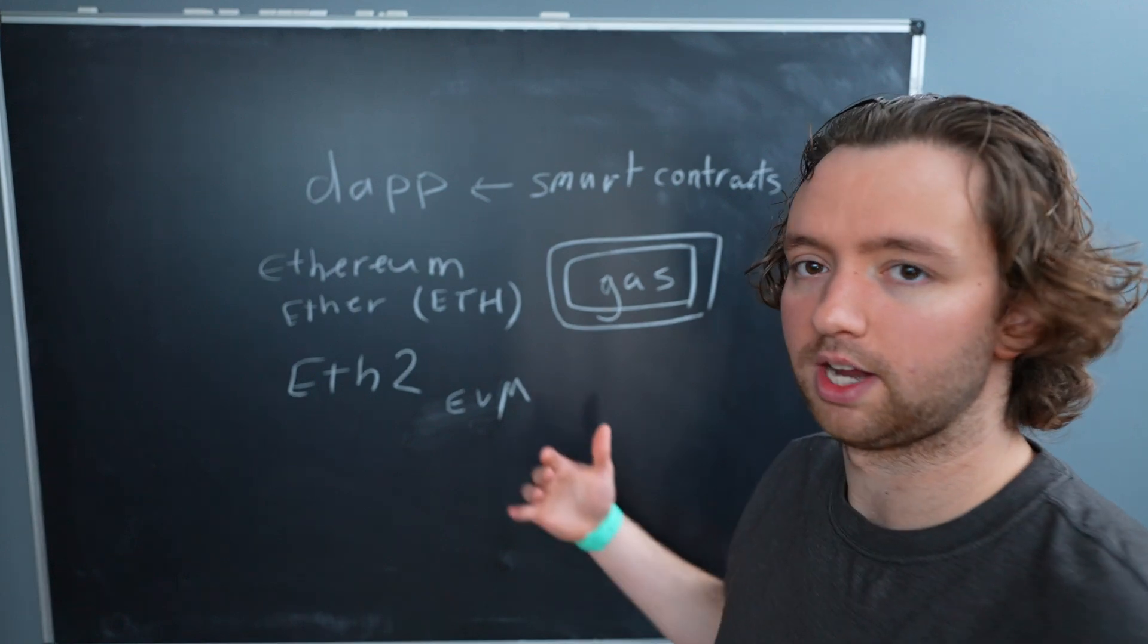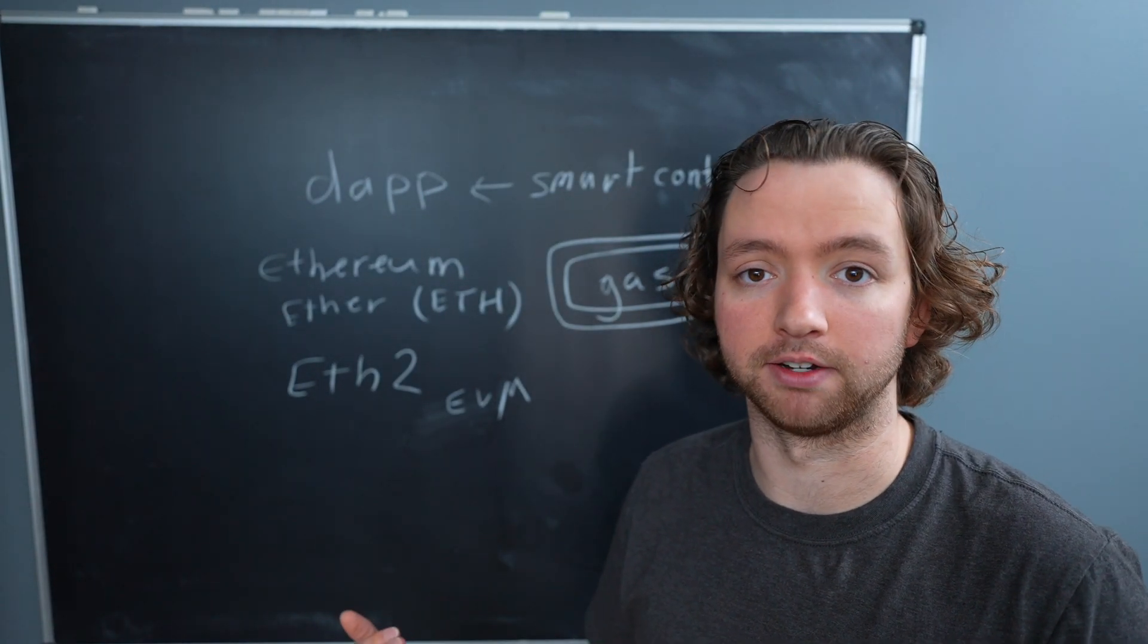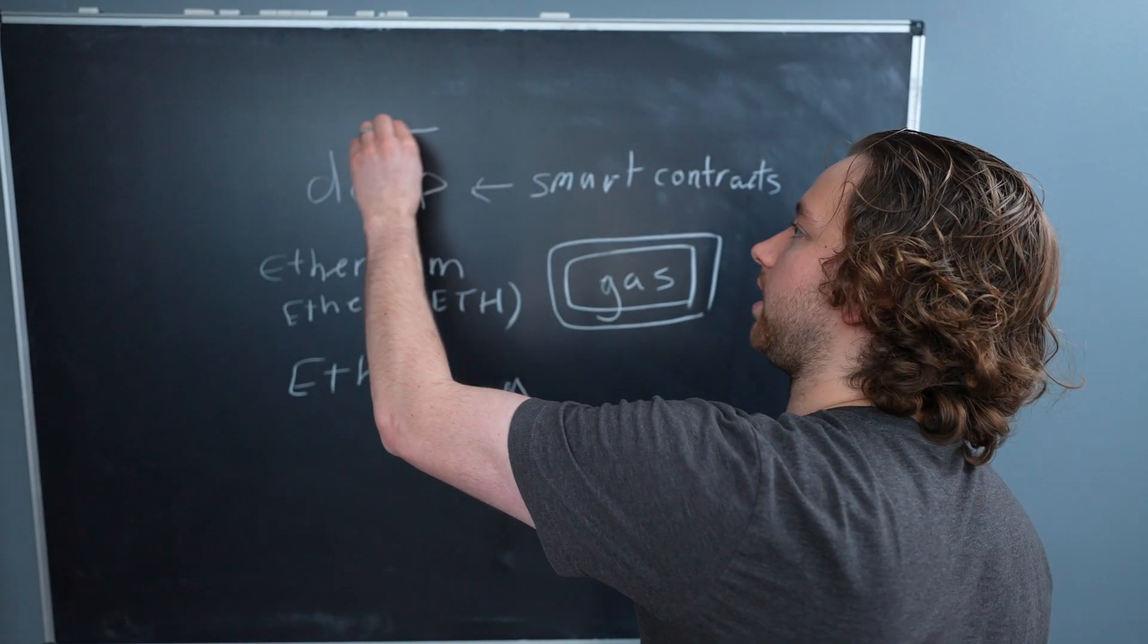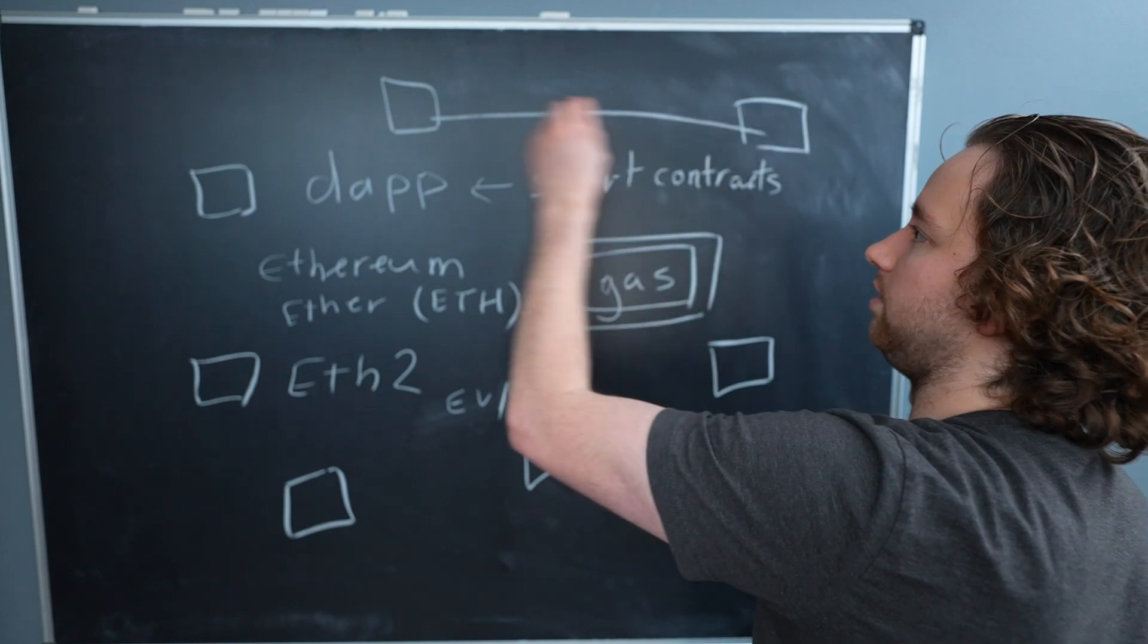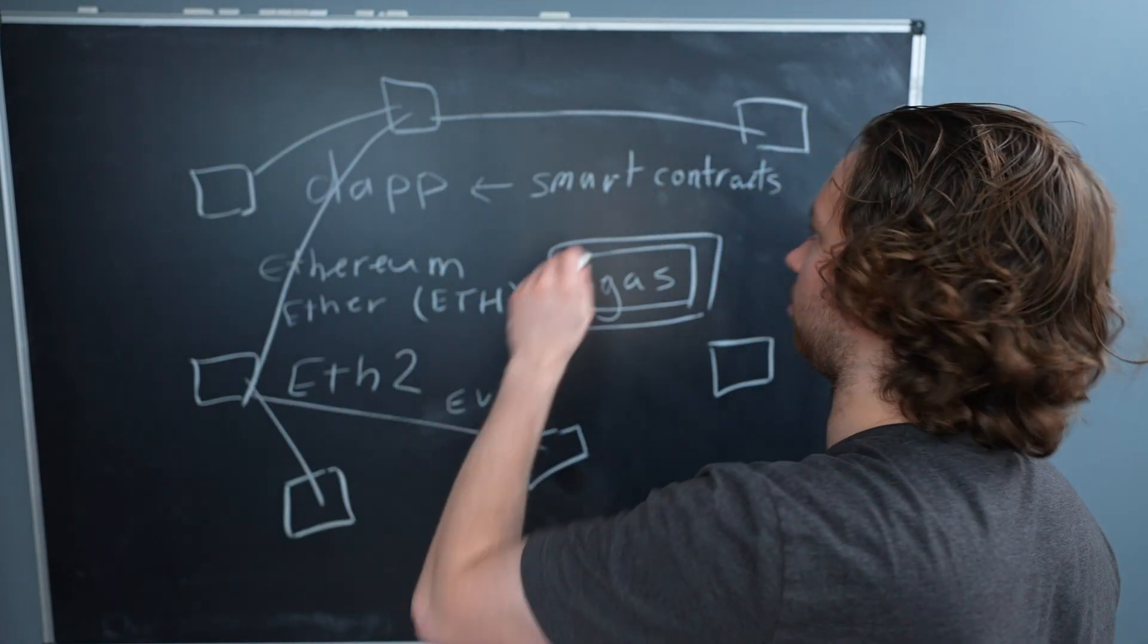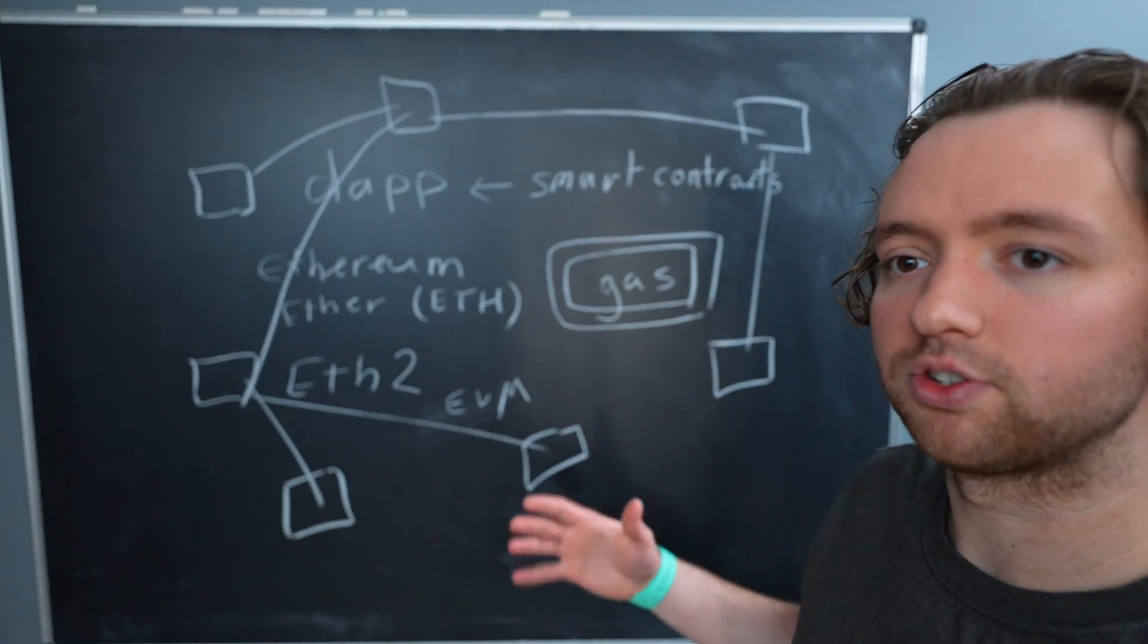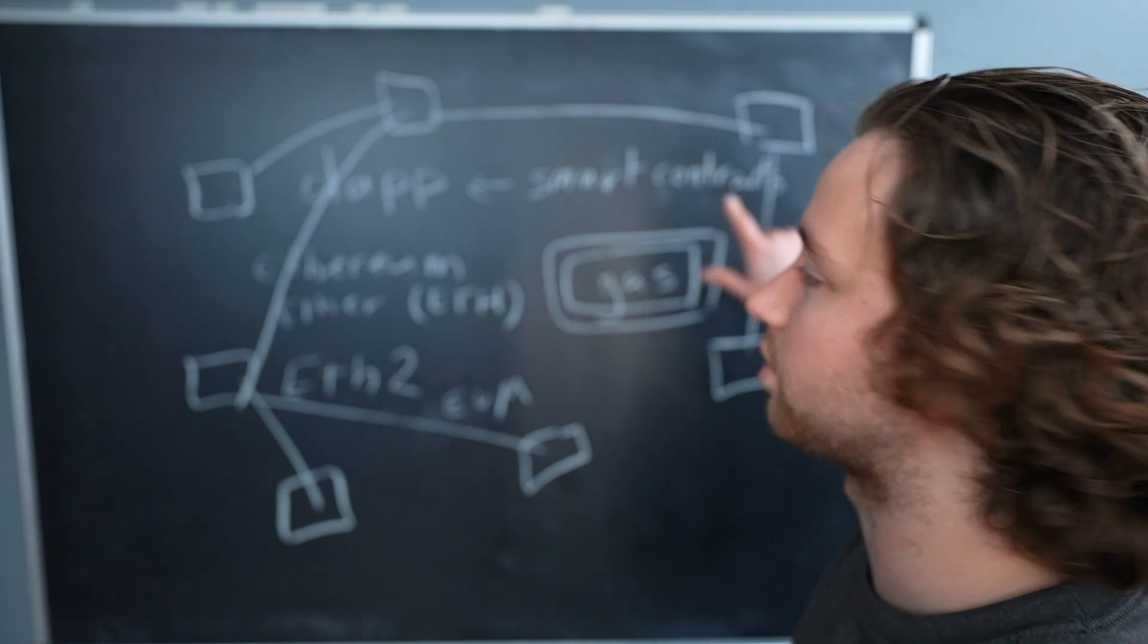This is all totaled up and then when that transaction occurs there is a gas fee. Now this gas fee, where does it go? Well it actually goes to the Ethereum miners. So all across the world we have Ethereum nodes and all these nodes are connected to one another through the blockchain.